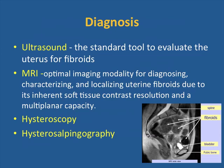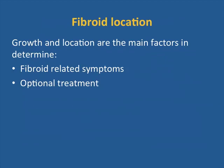Briefly about diagnosis: ultrasound is the standard tool to evaluate the uterus for fibroids. MRI is the optimal imaging modality for diagnosis, characterizing, and localizing the fibroids, due to its inherent soft tissue contrast resolution and multi-planar capacity. Other tools such as hysteroscopy and hysterosalpingography have quite limited use, especially for the submucosal type. The location of the fibroids is a very important factor, both for its related symptoms and for the optional treatments we might consider.